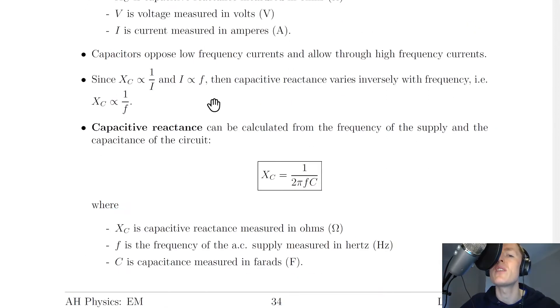And since we saw in the theory video for capacitors in AC circuits that current I is proportional to the frequency F, then we can arrive at the result that capacitive reactance varies inversely with frequency, i.e. XC is proportional to 1 over F.